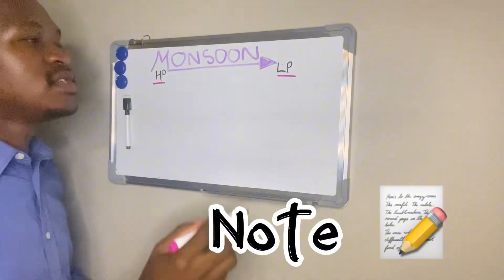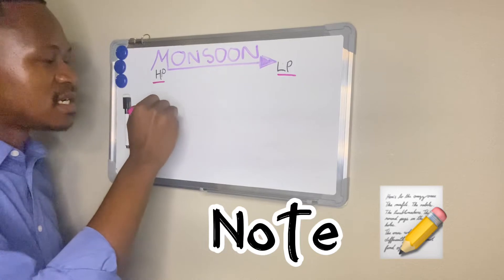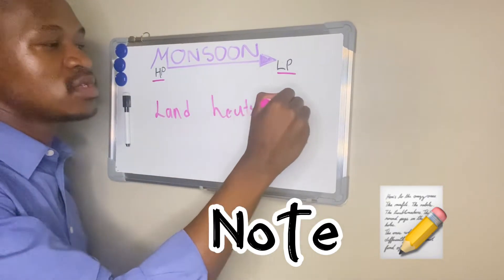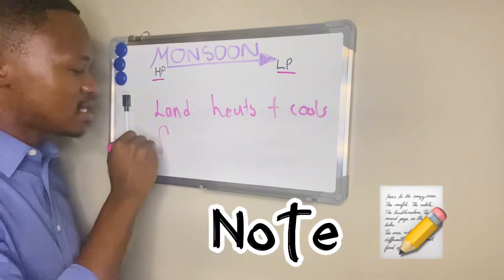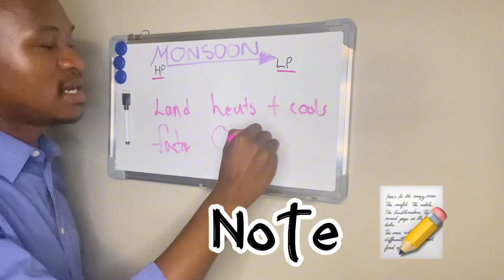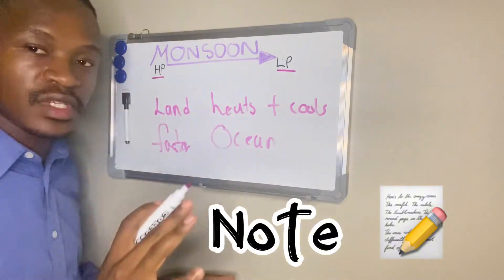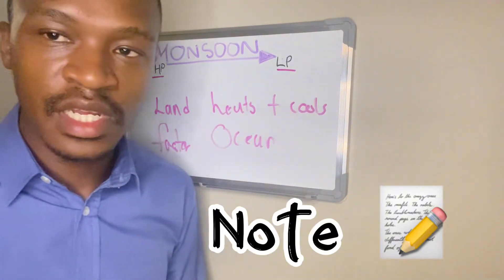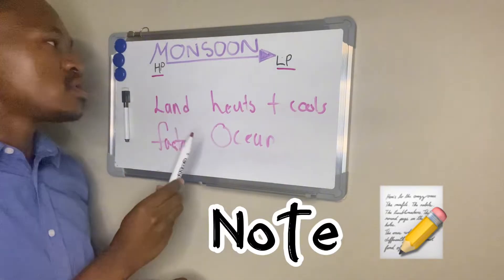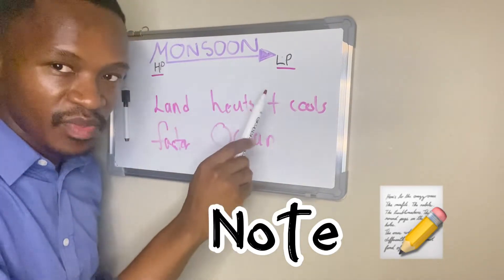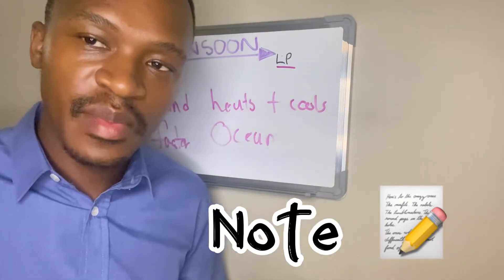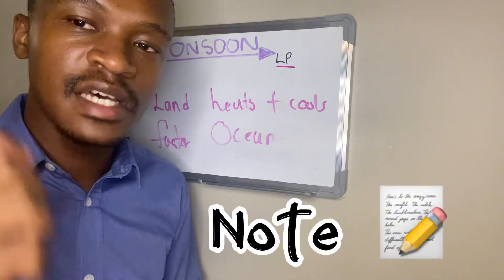You also need to know that land heats up and cools faster than the ocean. So remember: number one, winds will always go from a high pressure to a low pressure; and number two, land heats up and cools faster than the ocean.